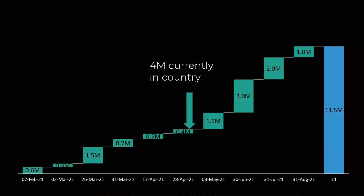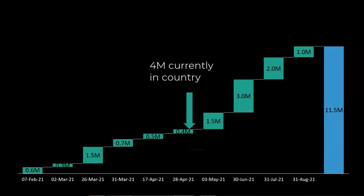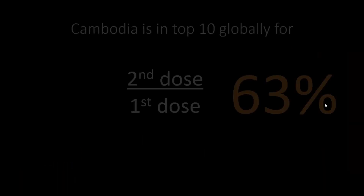Looking at vaccine supply, Cambodia just yesterday received another 400,000 doses of Sinopharm — 4 million vaccines currently in the country. They plan to expand that to 11.5 million by the end of August. This kind of chart I love — it's a waterfall chart, built into the newer versions of Excel and PowerPoint. It shows you the step increases and down amounts until the total, which is really good for showing what happened from one point in time to another.